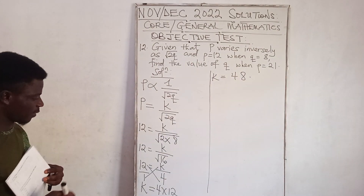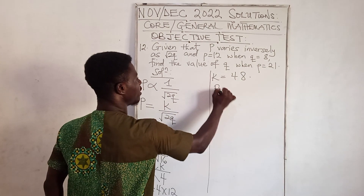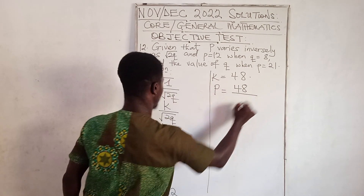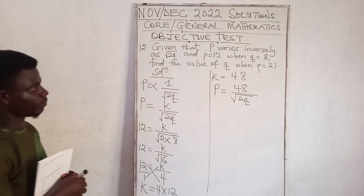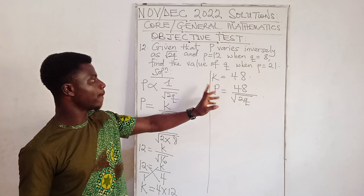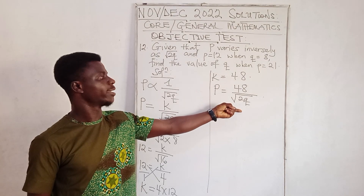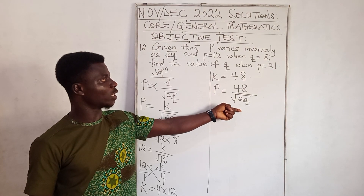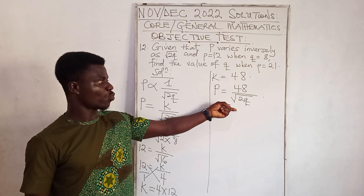Substituting back, P equals 48 divided by √(2K). This is the equation connecting P and K. If the question asks you to find the equation connecting P and K, this is your answer, and you use this equation to solve subsequent parts.